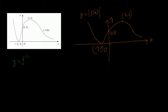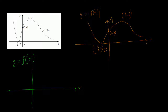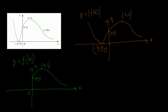Now let's do y equals f of absolute value of x for the same example. We take the sketch on the positive side of the x-axis — so the right-hand side of the picture — which gives points like 3 comma 6 and 0 comma 4. Because of absolute value of x, the negative x portion is completely removed, and this positive side is reflected on the y-axis, giving a point at minus 3 comma 6.